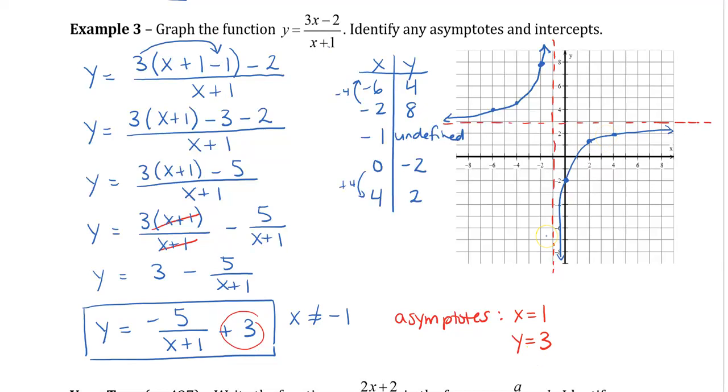So I've identified my asymptotes, and I also have to find my intercepts. So my intercepts, so to find my y-intercept, I'm going to plug in 0 for x. So my y-intercept is going to be 0 minus 2, 0 plus 1. So my y-intercept is equal to negative 2.